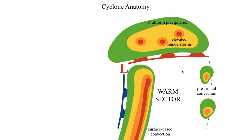Typically when you have a cyclone in the mature stage, you'll have some sort of surface-based convection in the warm sector, which is the region of warm, moist, and unstable air. This is just Mother Nature trying to resolve that imbalance — warm, moist air here and colder air everywhere else — usually resolved by kicking off shower and thunderstorm activity. This surface-based convection could be in the form of supercells, a squall line, or just regular thunderstorms, depending on what else is going on in the environment.